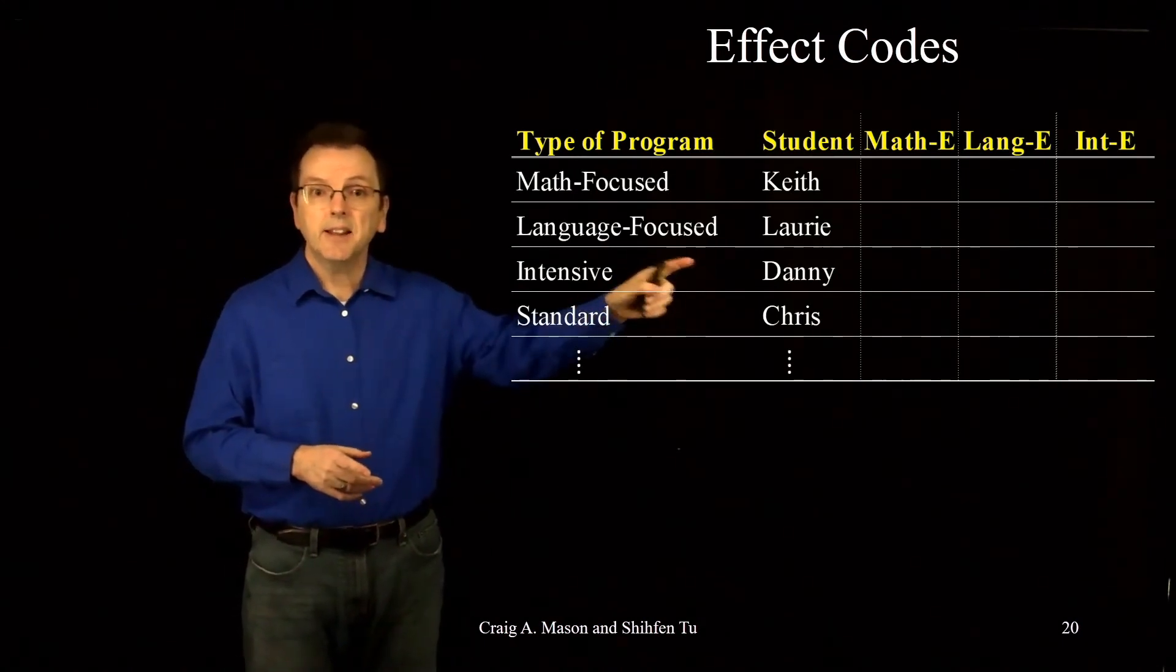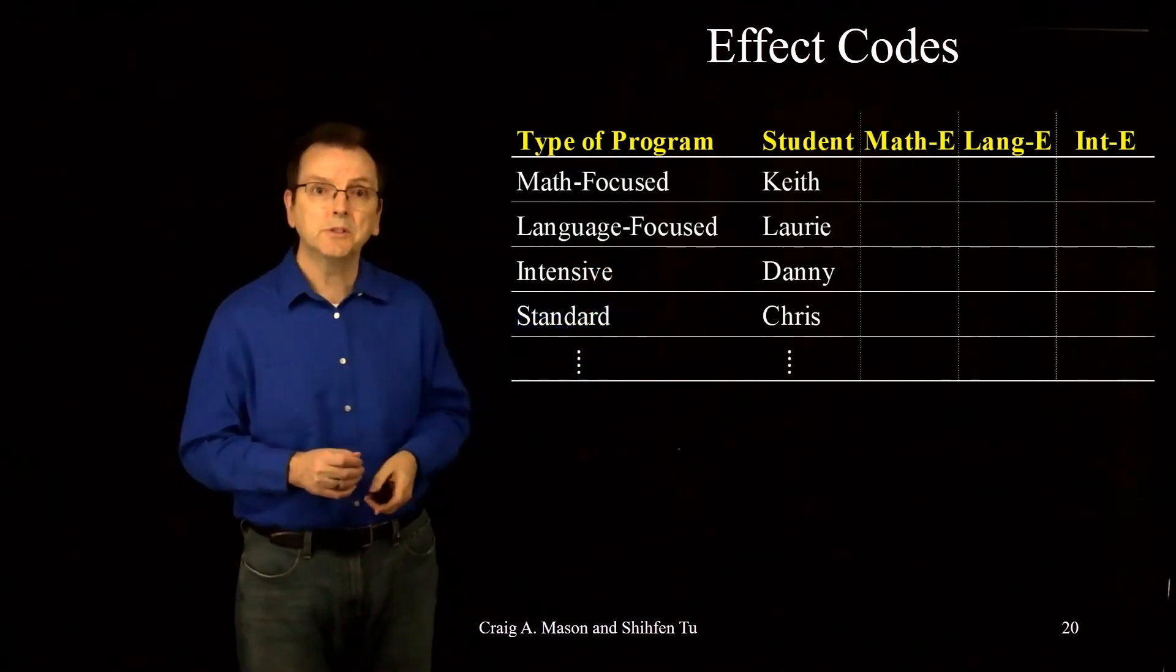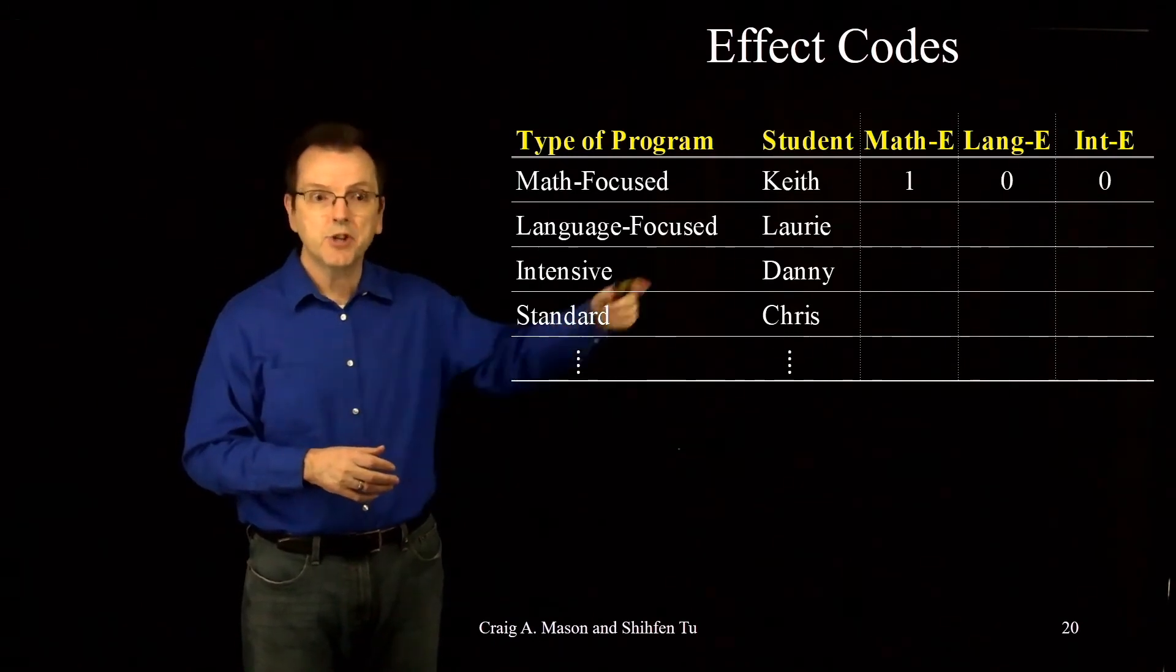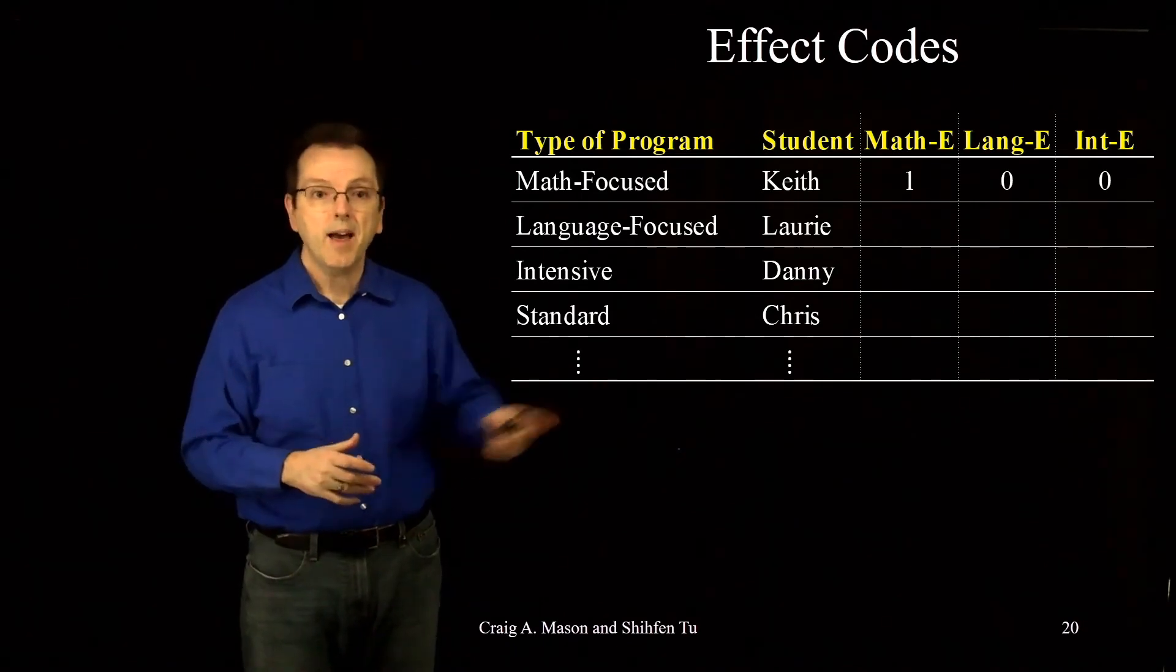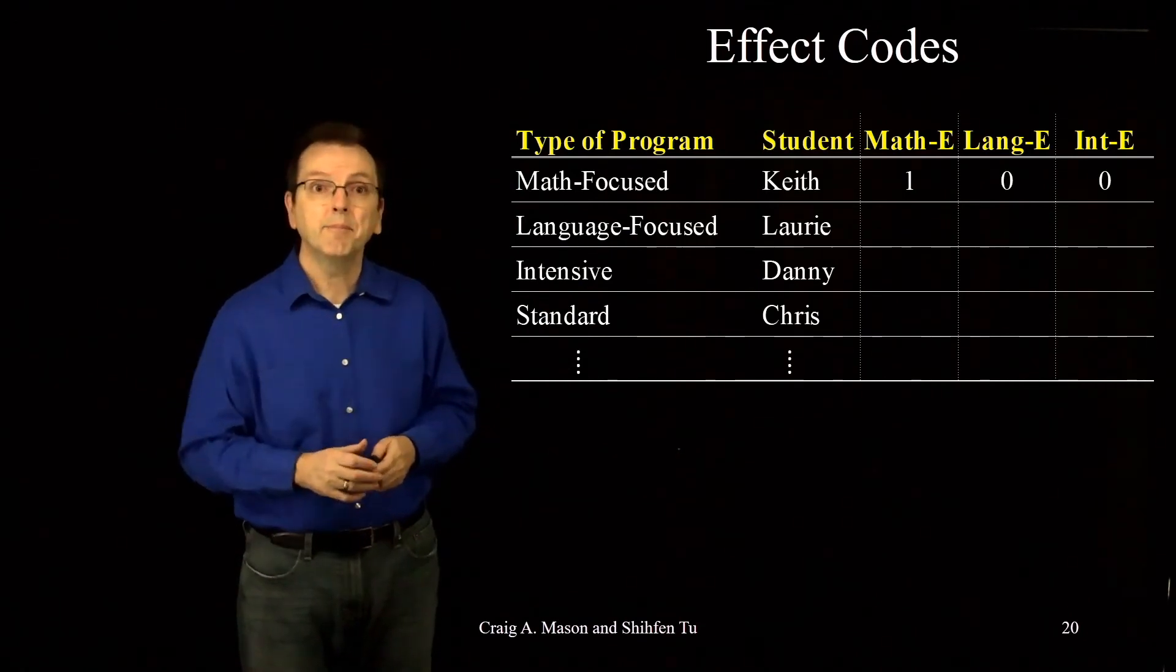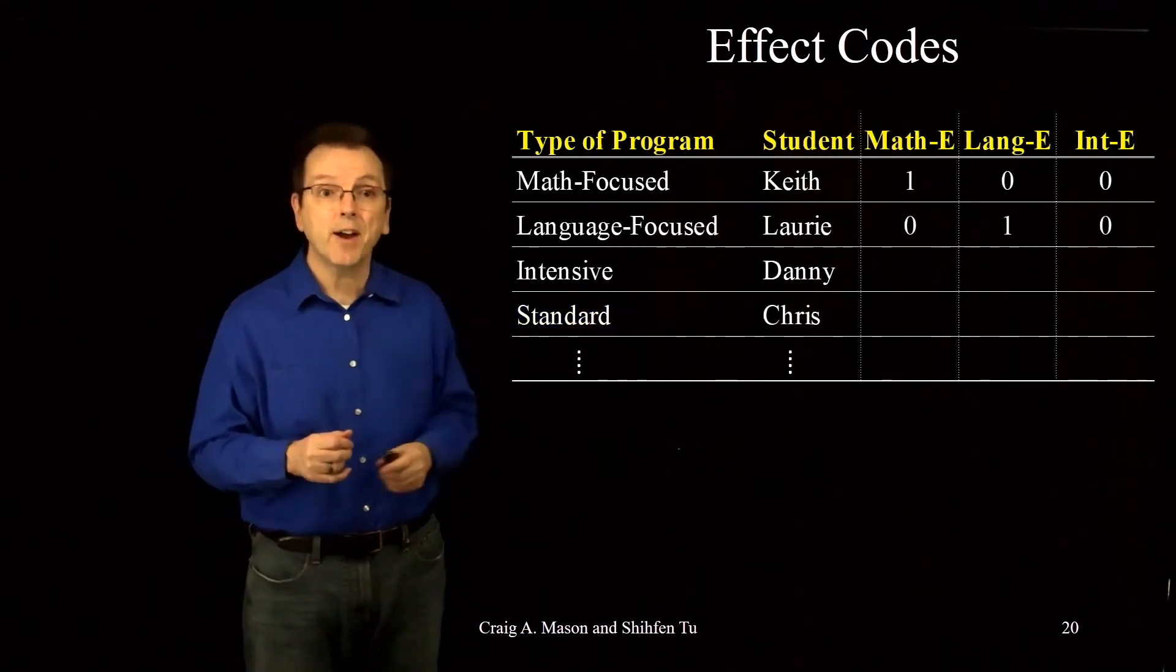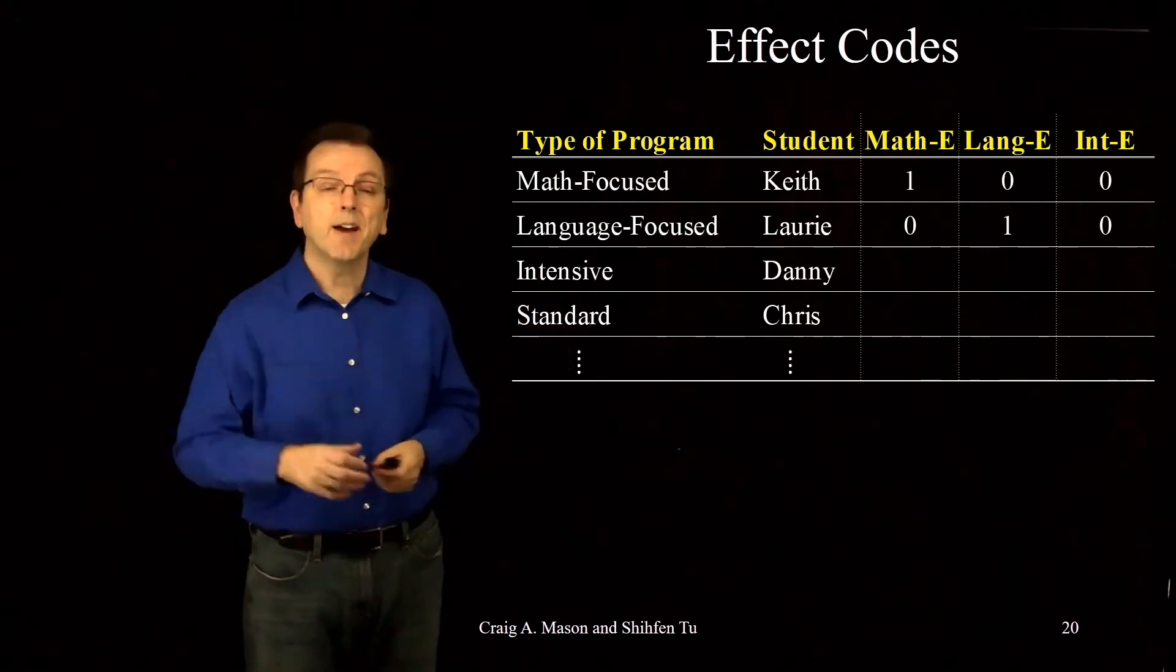Keith is in the math-focused curriculum, which is one of our three effect codes. So he would be a one for the math curriculum effect code and zero for the language and intensive curriculum effect codes. Then we have Lori. Lori is in the language-focused program. That's also one of our three effect codes. So Lori would be a one for the language effect code and zero for math and zero for the intensive effect code.